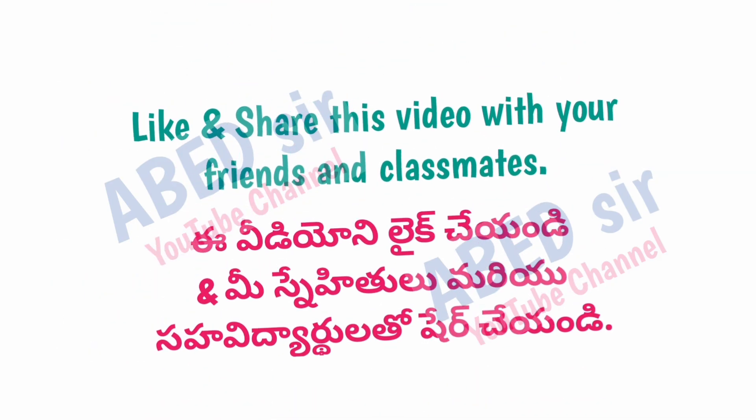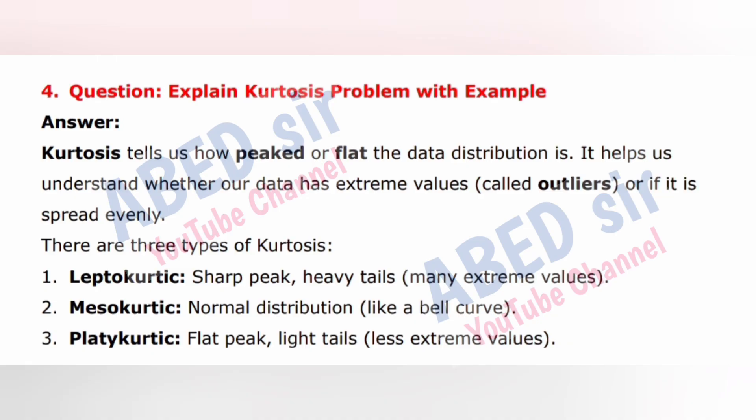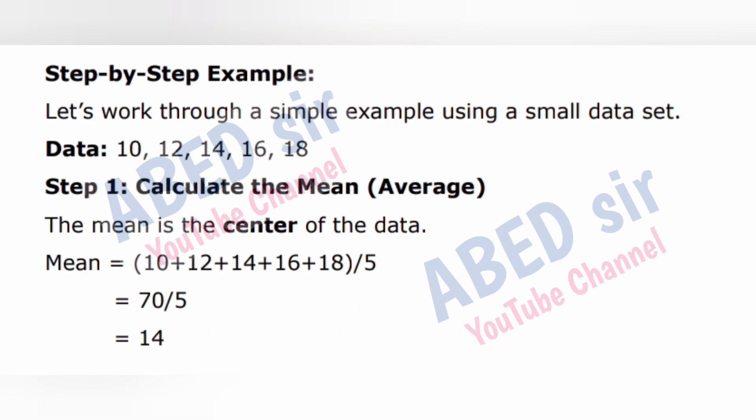Next important long question: Explain kurtosis with an example. Answer: Kurtosis tells us how peaked or flat the data distribution is. It helps us understand whether the data has extreme values (called outliers) or is spread evenly. Three types: 1. Leptokurtic — sharp peak, heavy tails, many extreme values. 2. Mesokurtic — normal distribution, like a bell curve. 3. Platykurtic — flat peak, light tails, fewer extreme values. Step-by-step example using data: 10, 12, 14, 16, 18.